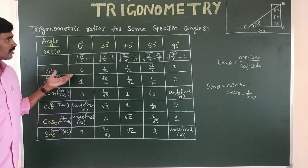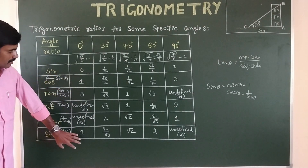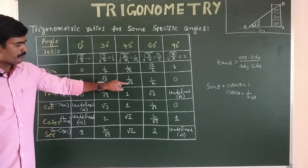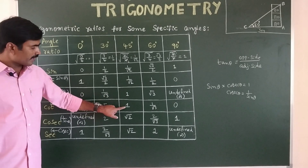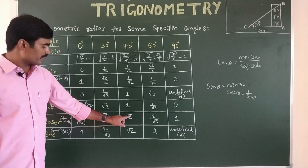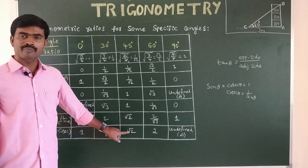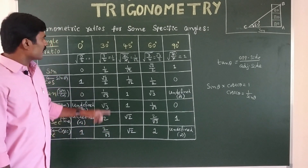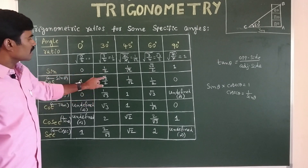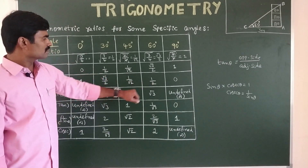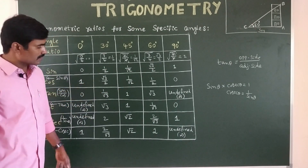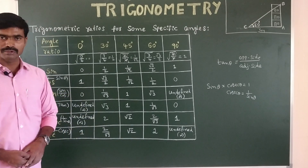Notable observations: sin 45° and cos 45° are the same (1/√2); tan 45° and cot 45° are both equal to 1; and cosec 45° and sec 45° are both equal to √2. Also, sin 30° equals cos 60°, and sin 60° equals cos 30°.